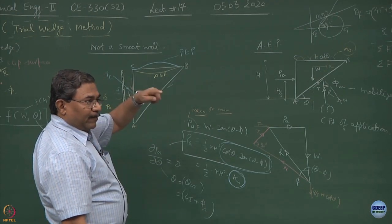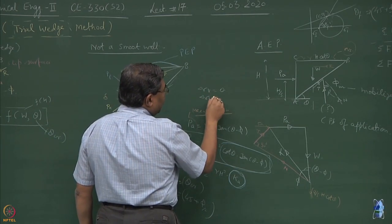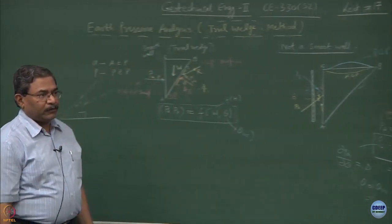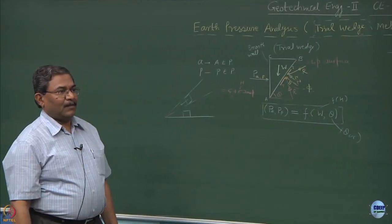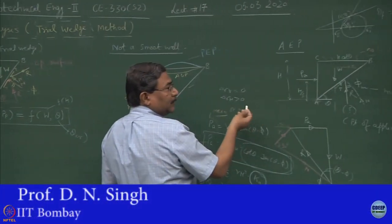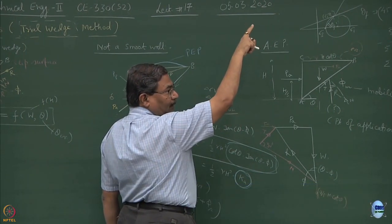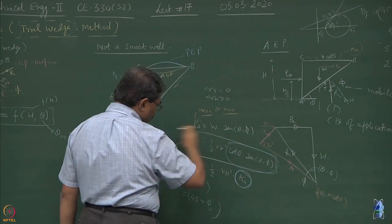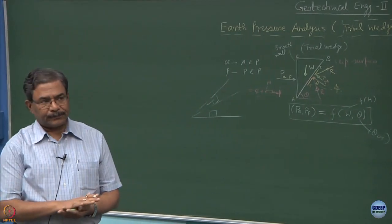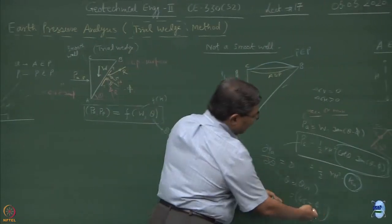For a constant sigma-v value, delta sigma-v equals zero. If delta sigma-h is greater than zero — meaning the wall is being pushed out — that is the active earth pressure condition. And if I reverse the situation, if delta sigma-h increment is greater than sigma-v increment, the wall is going to come in — that is passive earth pressure. That is the technical answer. And that is why we are maximizing and minimizing.